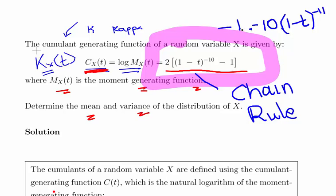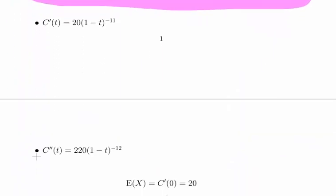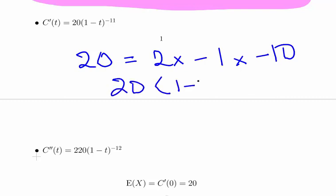And then the minus 1 and the minus 10 cancel out, so we get 10. And then we multiply that by 2, we get 20. This minus 1 here you can disregard - it disappears in the differentiation. So essentially that's our answer there: 20, which is 2 times minus 1 times minus 10. 20 times 1 minus t to the minus 11.